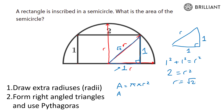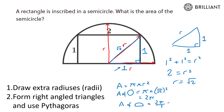The area of a whole circle is Pi times the radius squared. So the area of the whole circle would be Pi times root 2 all squared, which is Pi times 2, so 2 Pi. Therefore the area of the semicircle is half of that: 2 Pi over 2, which is just Pi. So the area of the semicircle is Pi units squared. That's our trick: draw radiuses, try and find useful ones, and form right angle triangles and use Pythagoras.